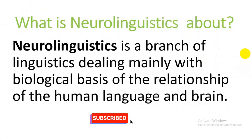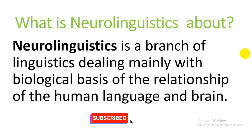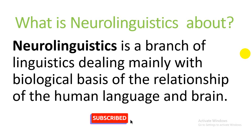What is neuro linguistics about? Neuro linguistics is the branch of linguistics dealing mainly with the biological basis of the relationship of human language and brain. Two things are very important in neuro linguistics: first of all, the brain, and second is language.